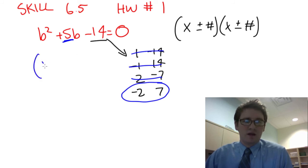So I would write this in the format x minus 2, x plus 7. And that right there is the factored form.